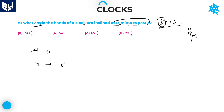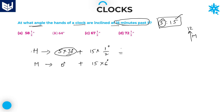For the hours hand: for 5 hours, it will move 5 into 30 degrees, because for every 1 hour the hours hand moves 30 degrees. Then for the remaining 15 minutes, the hours hand covers half a degree for every 1 minute, so 15 into half. For the minutes hand, we cover 6 degrees for every 1 minute, so 15 into 6. The hours hand total: 5 into 30 is 150, plus 15 by 2 which is 7.5, giving 157.5 degrees.